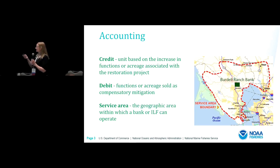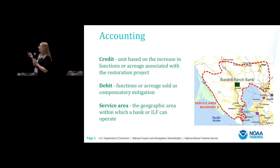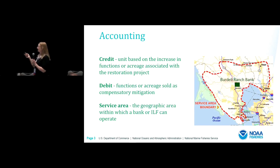Here's an example of a service area — it's probably California — a place called Burdell Ranch. That red dotted line is the area in which they can sell credits. So an impact within that red area can be compensated for by buying credits at the Burdell Ranch Bank, which is that gray square.